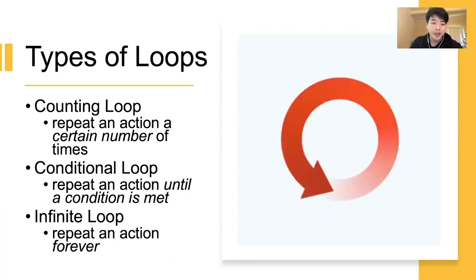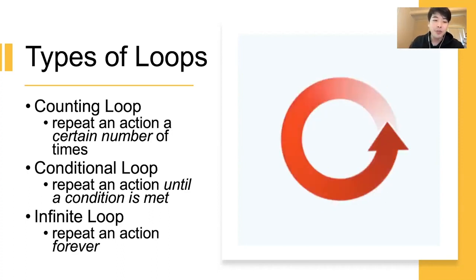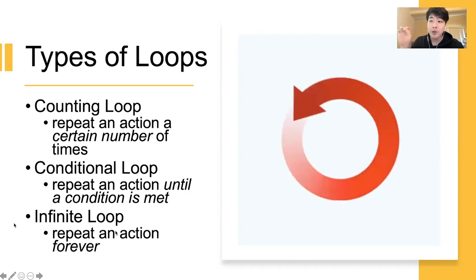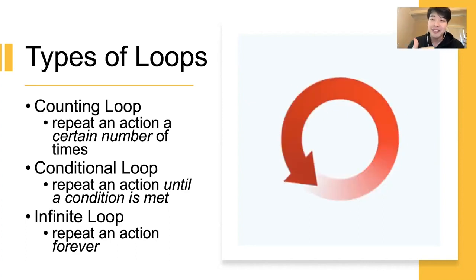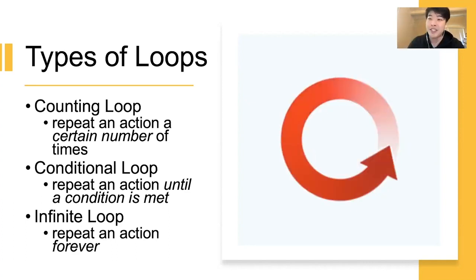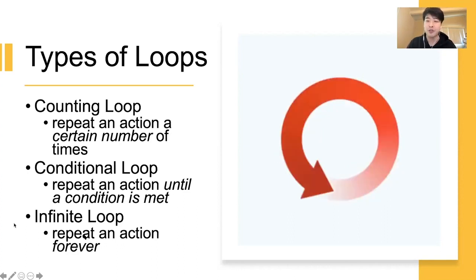A third one is infinite loop — it's repeating an action or sequence of actions forever. Infinite loop is very dangerous in programming because once the computer goes into the infinite loop, it can never come out unless an external action disturbs or interferes with it. So infinite loop is something you have to be very careful of.